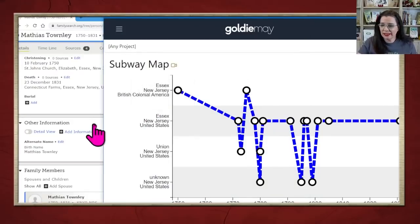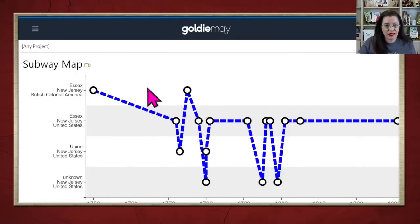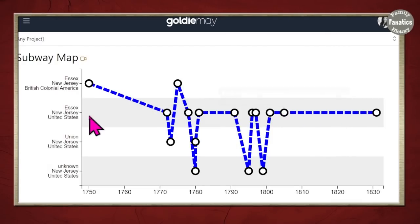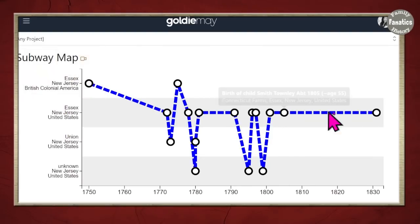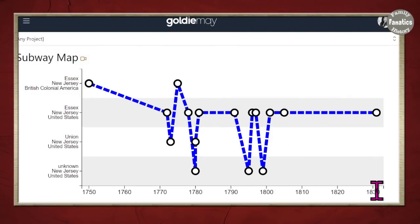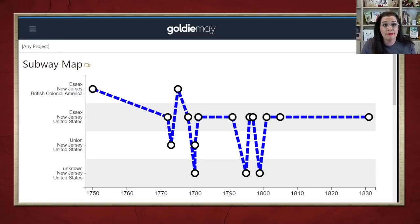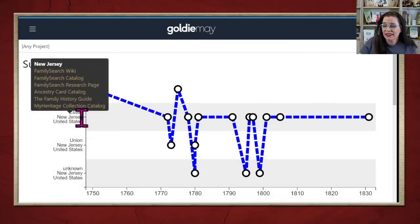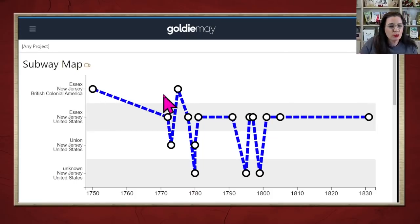If you do have sources that are not showing up in the map, then you need to go back and clean up the facts and add more details. When you see a horizontal line, that means the person is staying in that location — this happens to be Essex County, New Jersey for a long period from 1800 to 1830. When you start seeing zigzags, it's possible that you have some messes to clean up. But some zigzags might simply be name changes for that location.